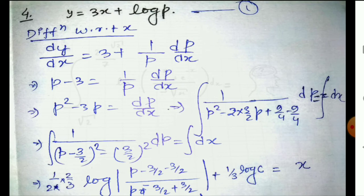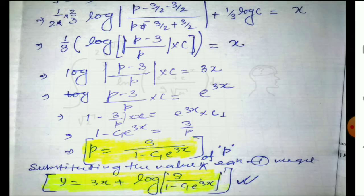For question 4, we integrate 1/(1 + p²) dp. I take the constant as (1/3)log c because it makes multiplication easier. Taking (1/3) as common, using log properties we get (1/3)[log p − log(3/p·c)], which simplifies using log properties to log(p − 3/p) + log c.